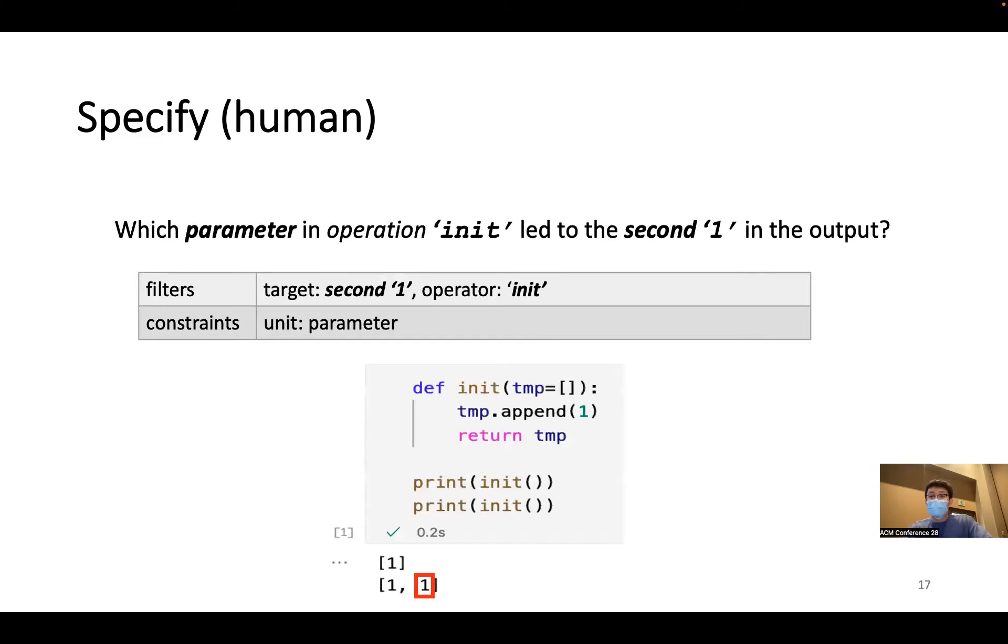A specification can also be constraints regulating the provenance outputs. The most important one would be at which unit should the provenance be at. So in order to answer the provenance question we have seen before, one would specify the tracing target as the second one in the output, and the operator of interest is init, and the unit should be parameter.